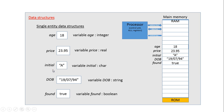This one is a single character and the name of that data structure is 'initial'. Here we've got a whole string, and at the bottom we have a boolean variable — a data structure that's just going to hold either true or false. The key thing to remember is that these data structures have to be stored in main memory so that we can manipulate them.